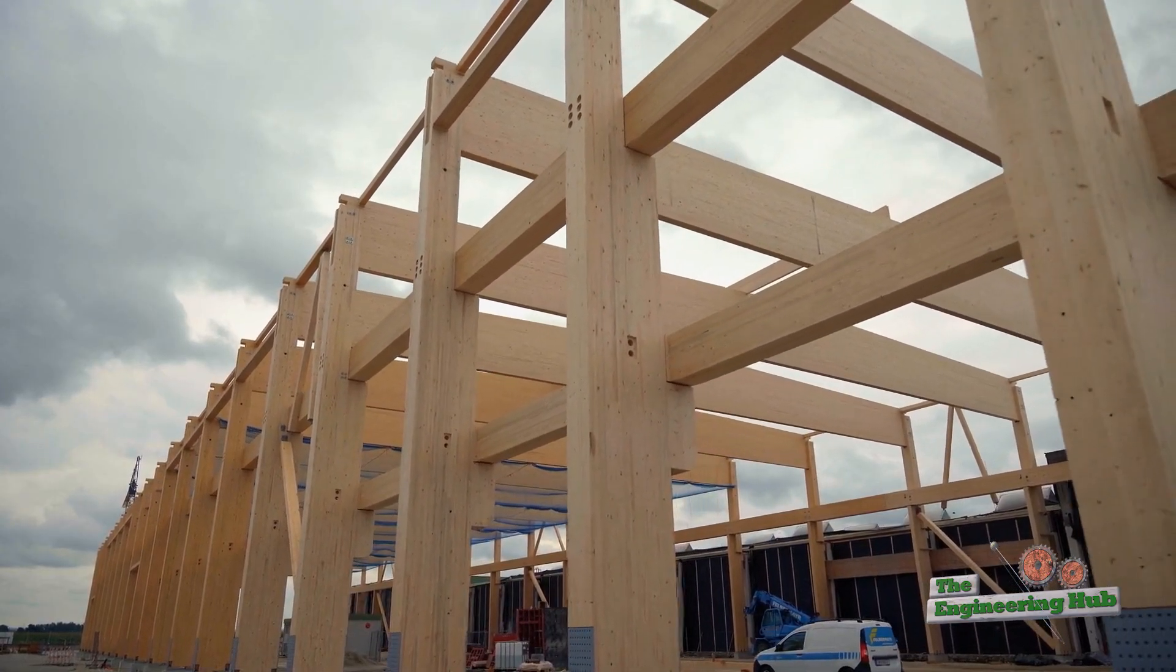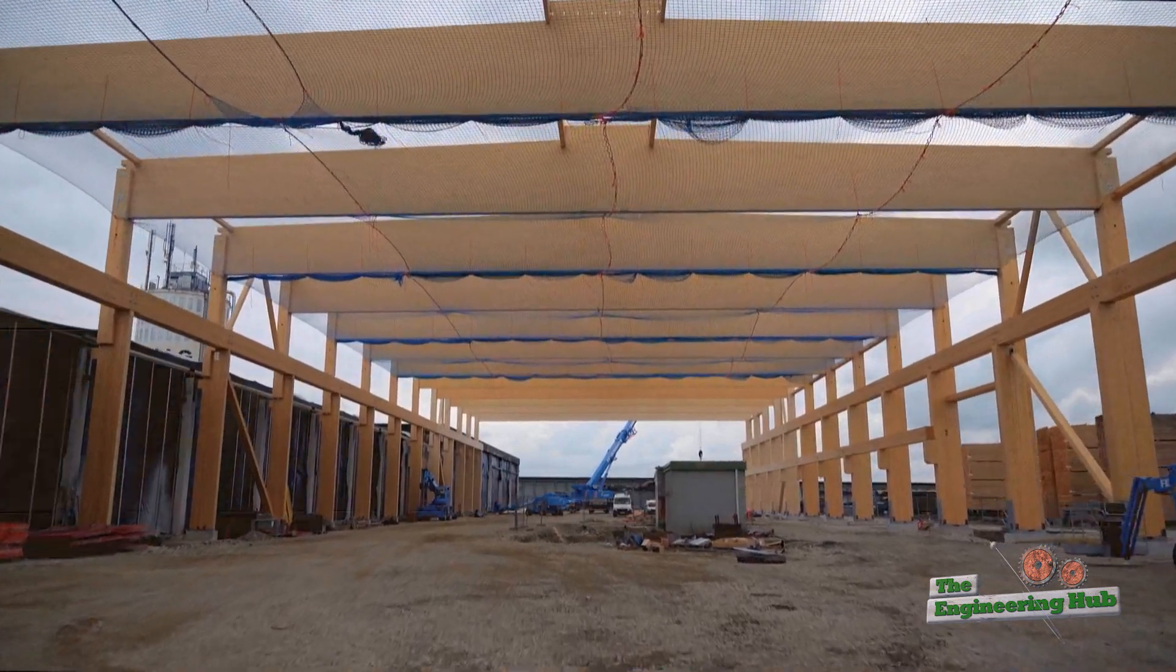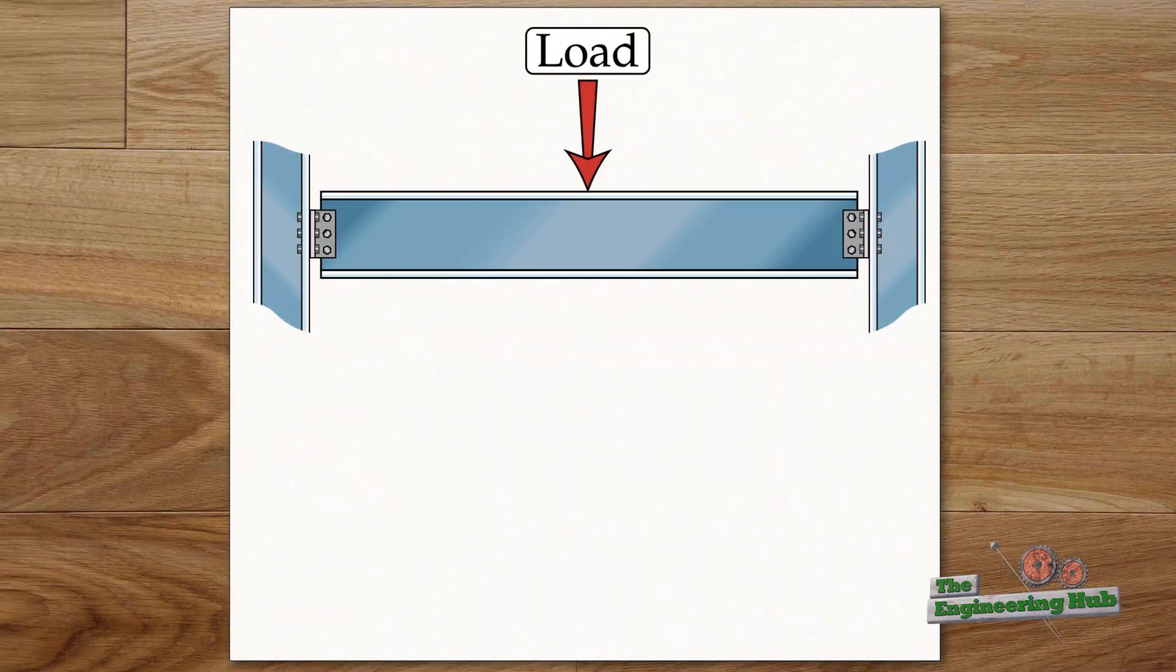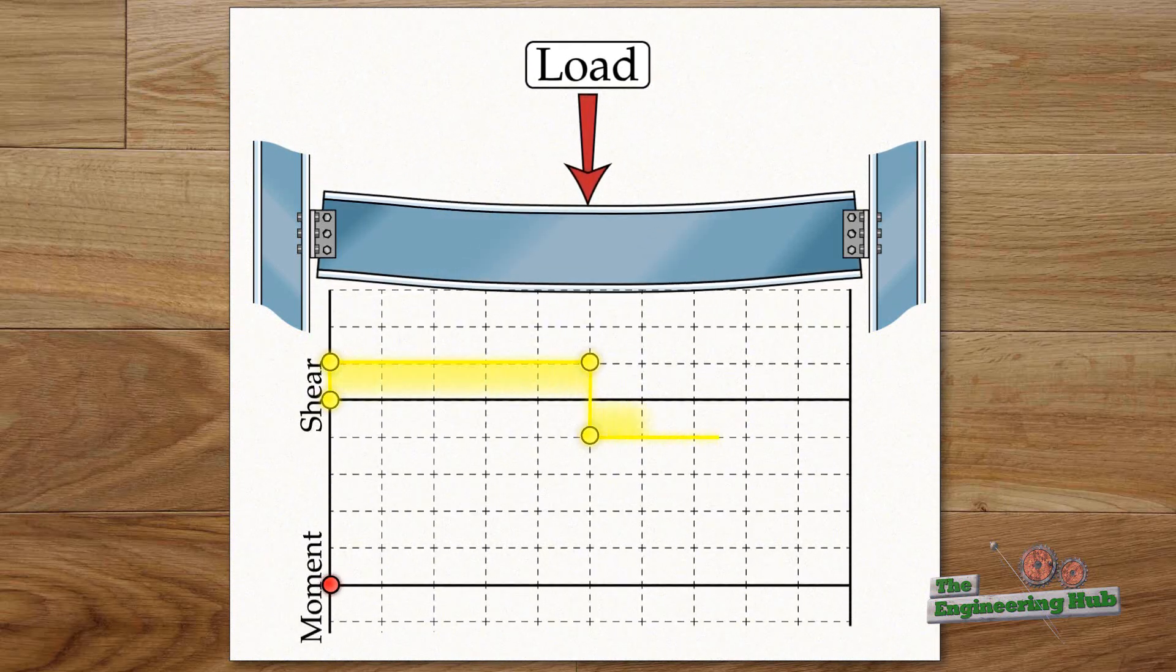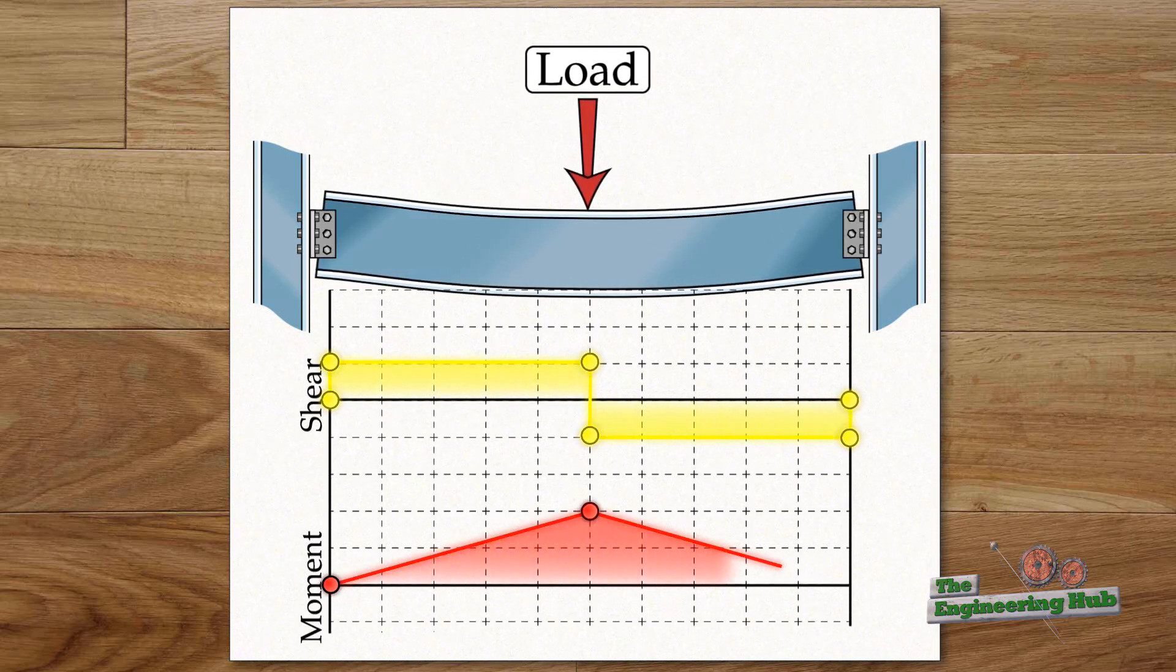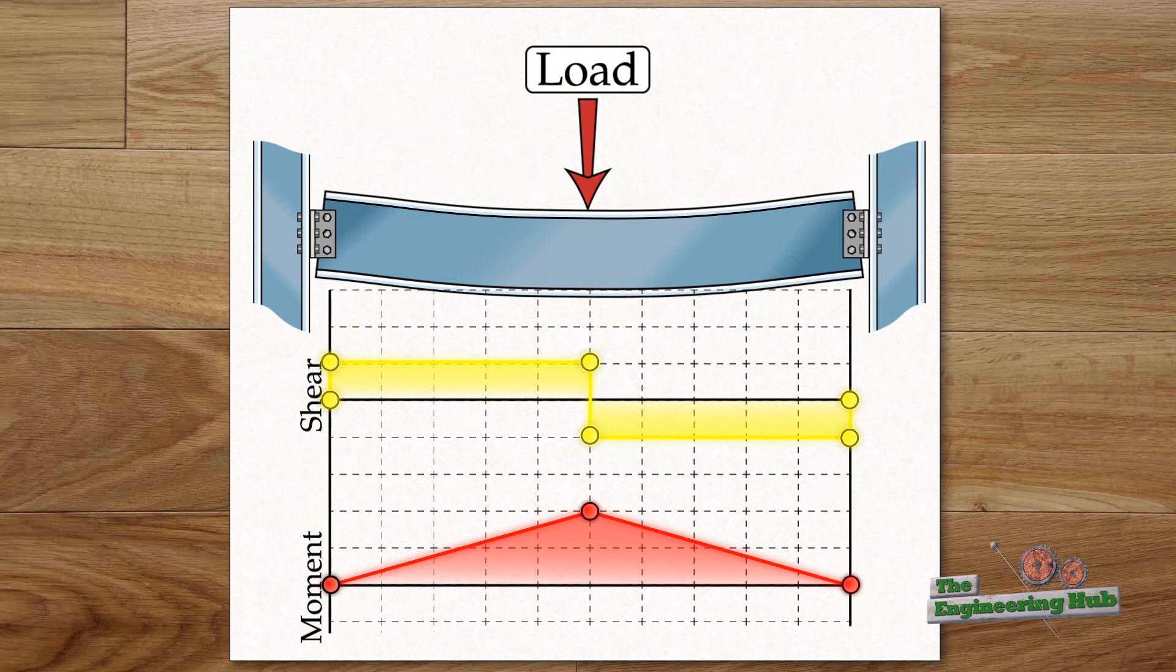In most beams, the amount of bending is not uniform along the length of the beam. For example, for a simple beam loaded with a point load, the maximum bending occurs logically at the loading point, while the ends are free to rotate and therefore do not have any bending.